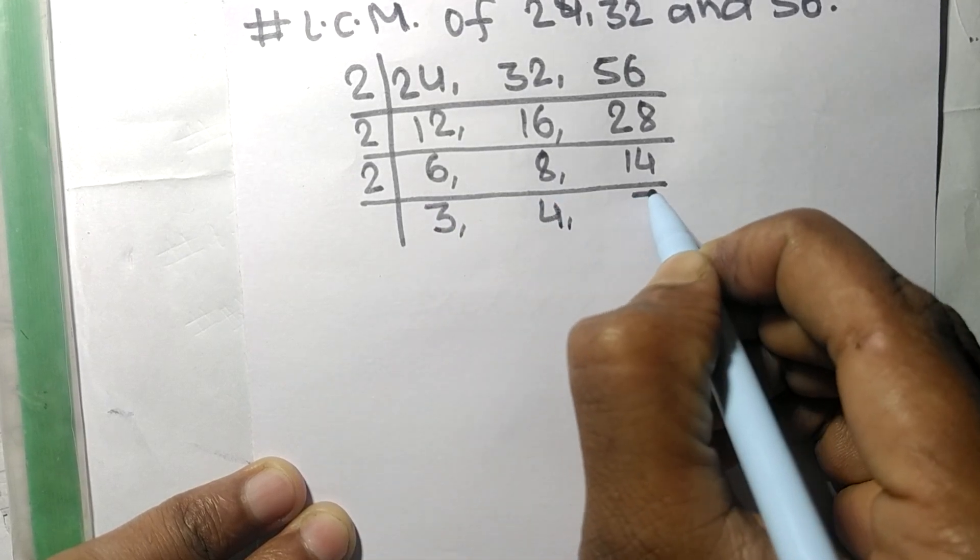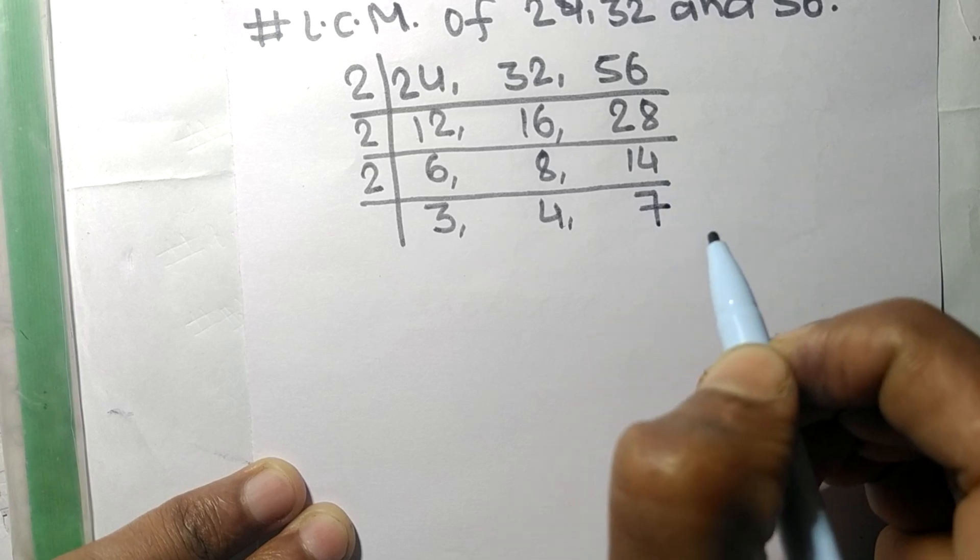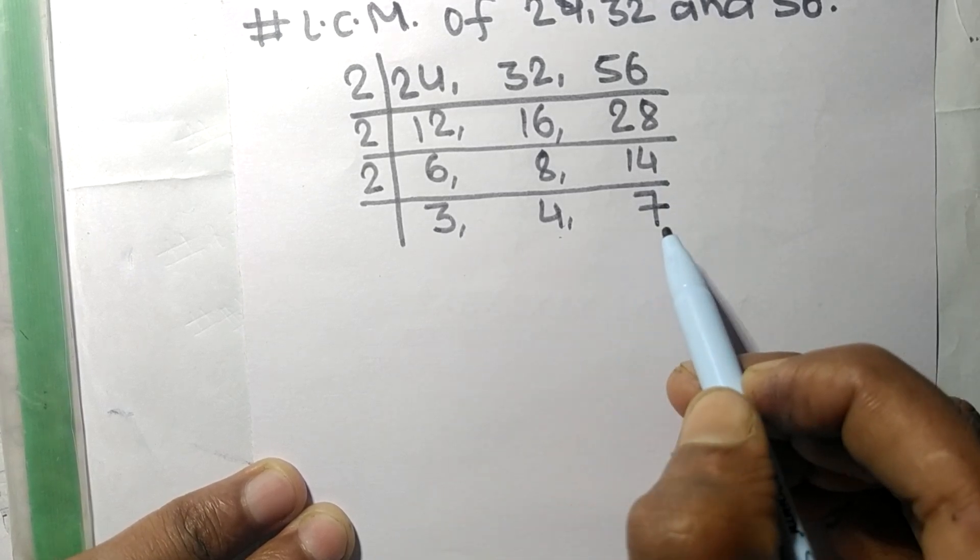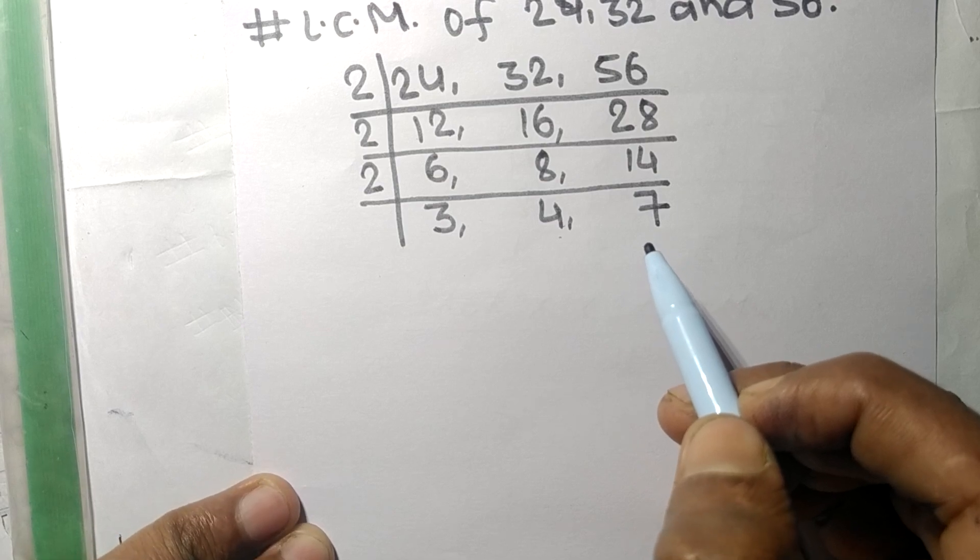2 times 7 means 14. So now the numbers 3, 4, and 7 are not divisible by the same number.